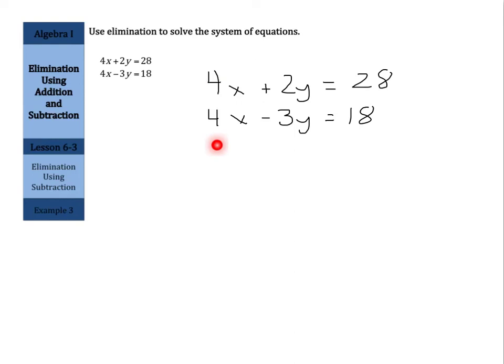Now, when deciding whether or not to add or subtract, is adding going to help us eliminate anything here? Not really, because just mentally, you can see that 4 plus 4 is 8, 2 plus negative 3 is negative 1, and this doesn't really matter. That doesn't eliminate anything by addition. And just looking here, we need to subtract. So what happens when we subtract? Well, 4x minus 4x is 0x. That just kind of goes away.